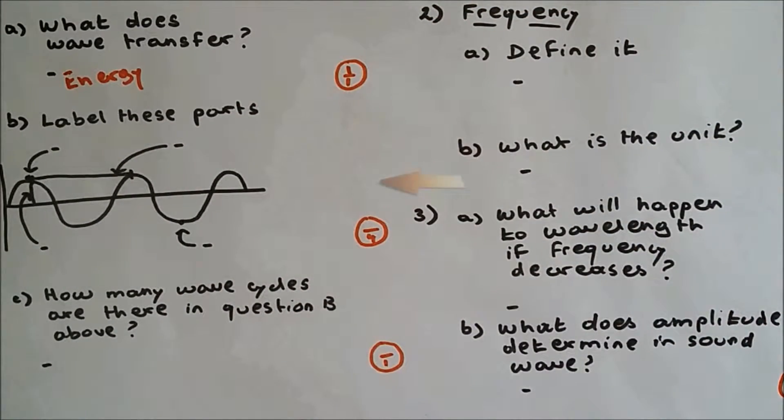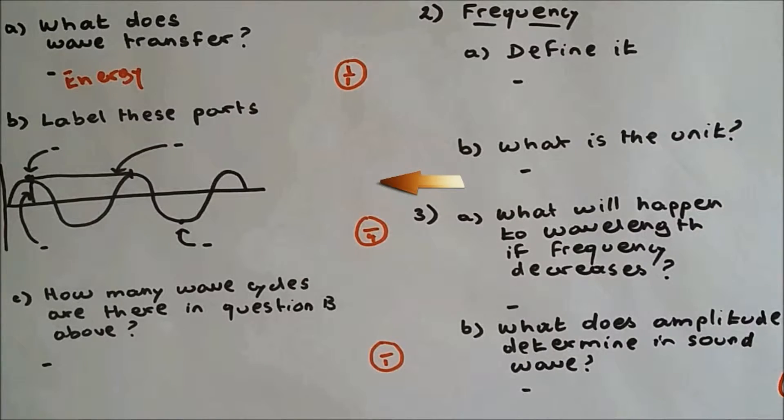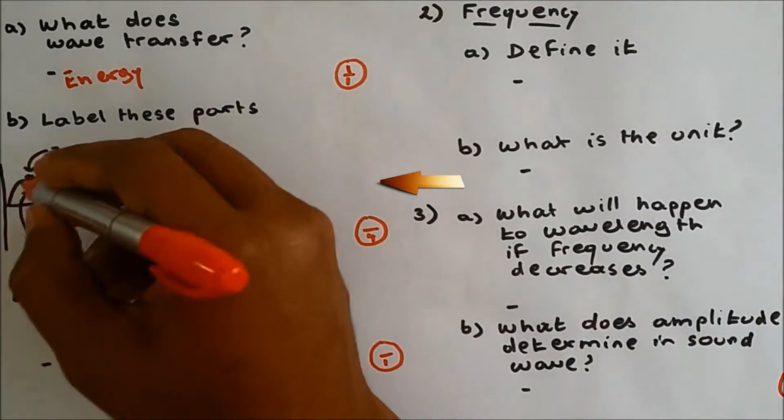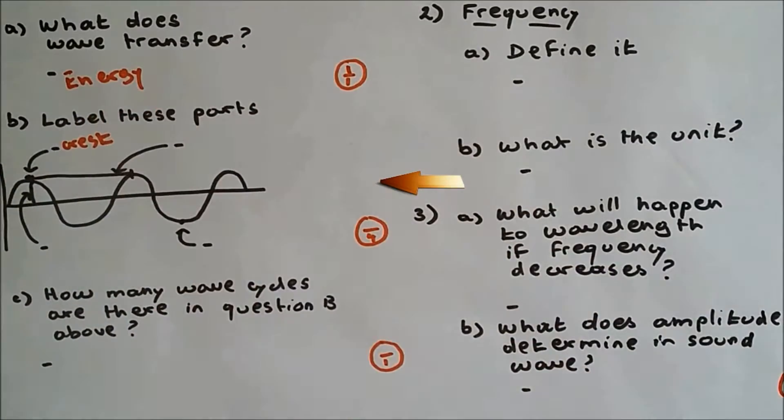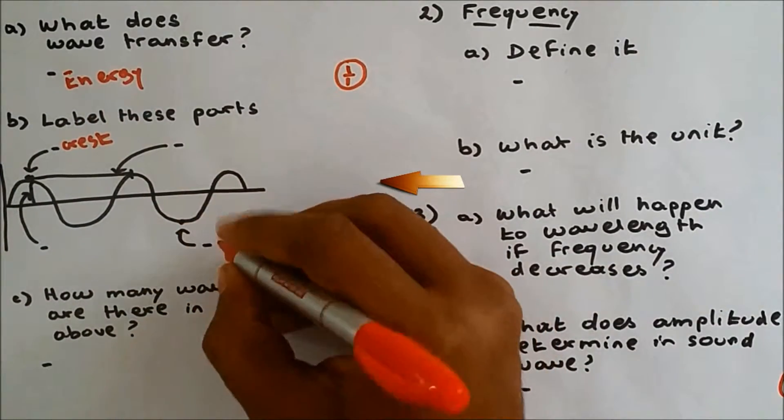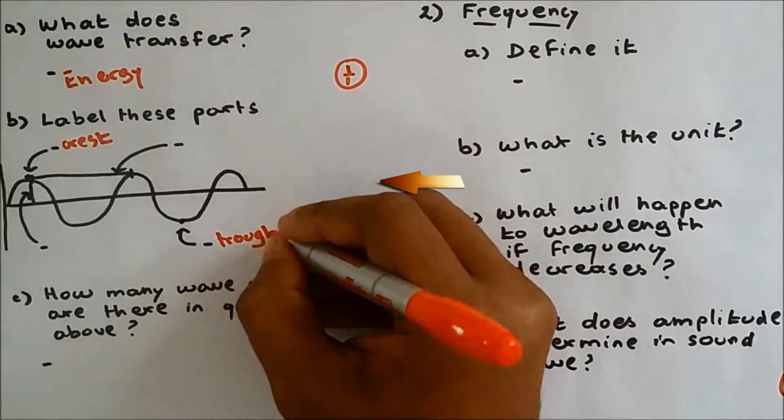1b. Label this part. On this diagram of a wave, you have to label all these four parts. The peak is called a crest and the bottom point is called a trough.